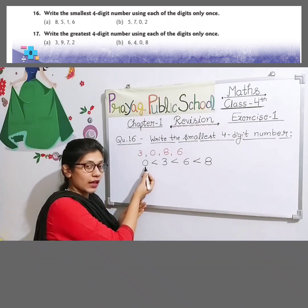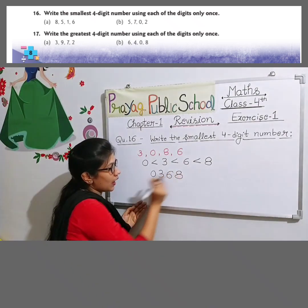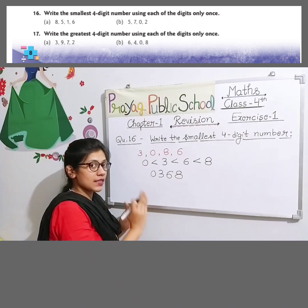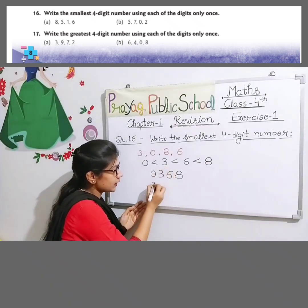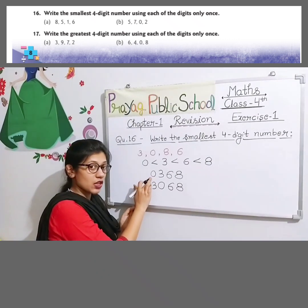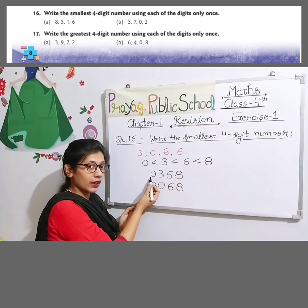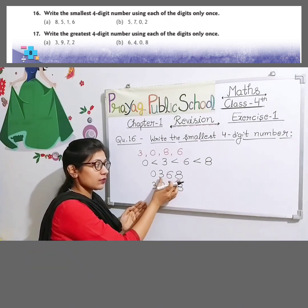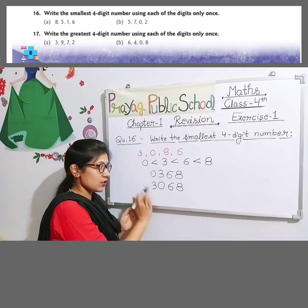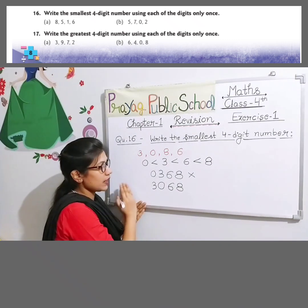But, jab bhi 0 given hota hai, to hum 0 ko 1st place pe nahin likhte hain. Suppose aap is tarah nahin likhenge: 0, 3, 6, 8 — kyunki agar 0 aage hoga to wo number 4-digit nahin hoga, sirf 3-digit rahega. Humein 4-digit ka smallest number likhna hai. To 0 ko hum hamesha left-hand side se second place pe likhte hain. Kaise likhenge? Sabse pehle hum 3 ko likhenge, aur 3 ke baad 0 likhenge: 3068. Humne sirf 0 ki position change ki hai. This number is correct — the wrong one with 0 at the front should be erased. Clear? 0 ko aap hamesha left-hand side se second place pe rakhoge.